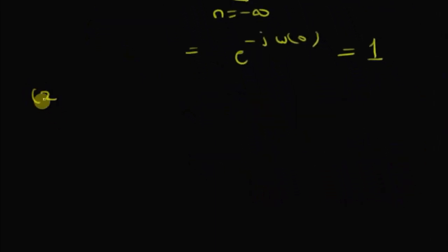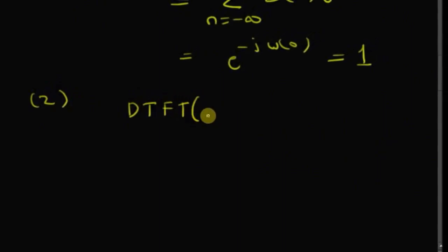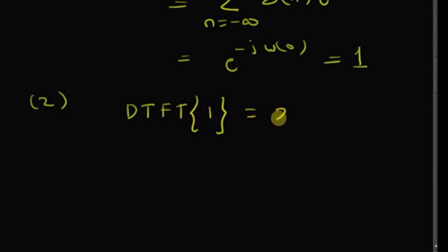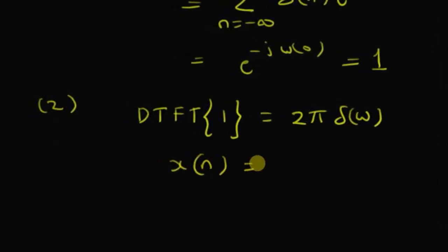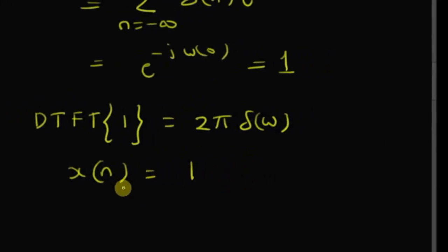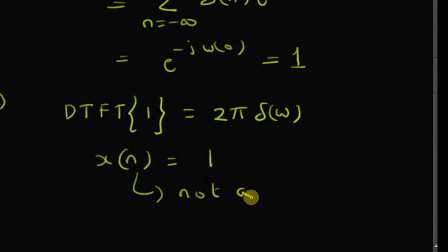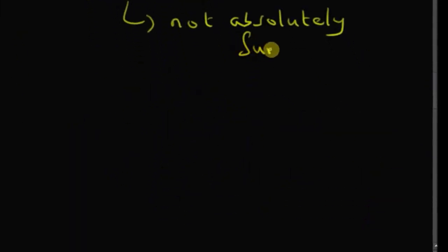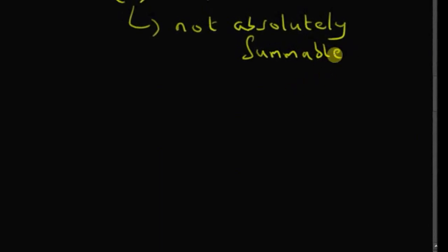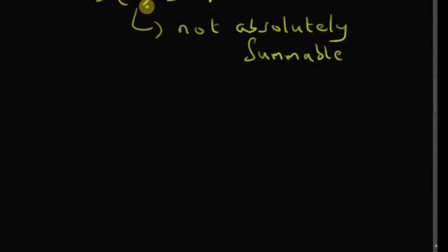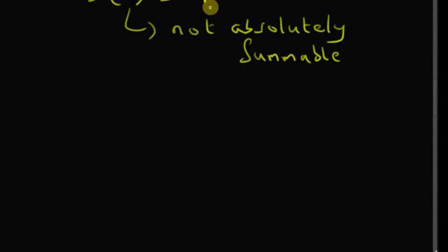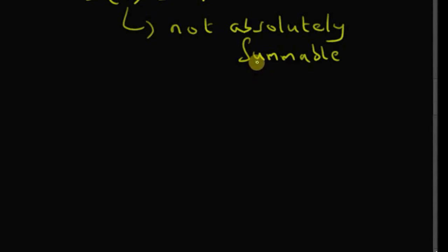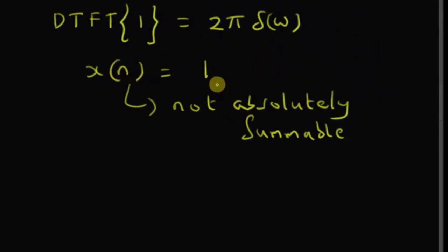For the second one, the DTFT of the constant one is equal to 2π times δ(ω). Since the signal x(n) = 1 is not absolutely summable — that is, the value of the signal is one for all values of n, so when you add up all the values it is not finite — it violates one of the conditions required for the DTFT. However, x(n) = 1 still has a DTFT.